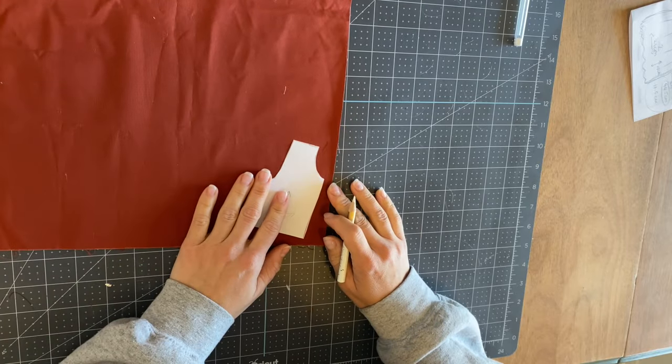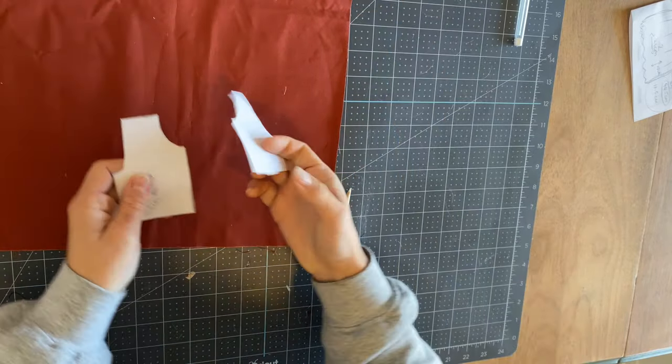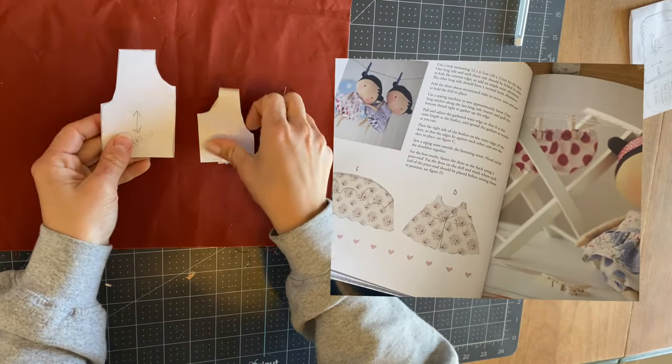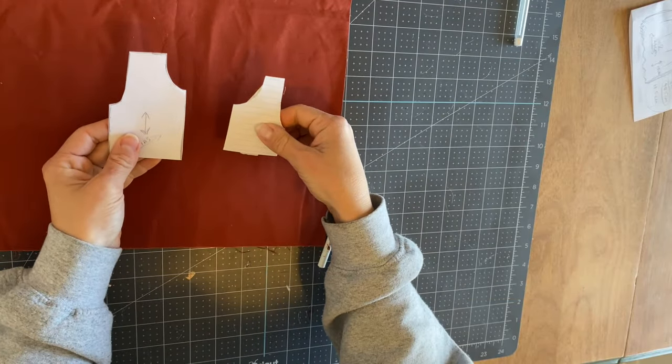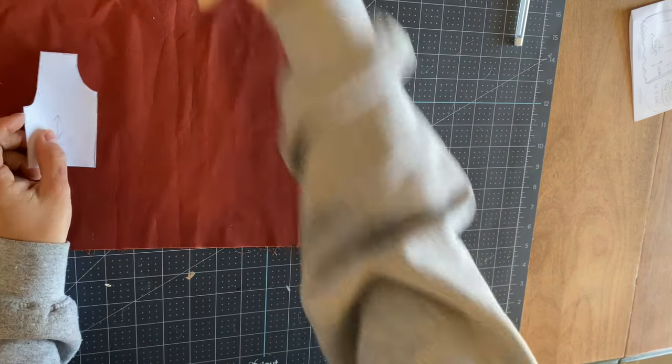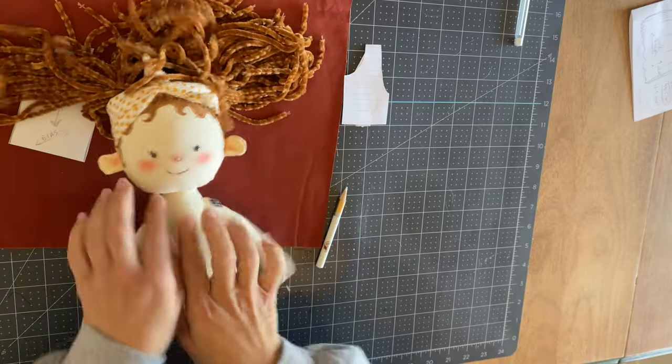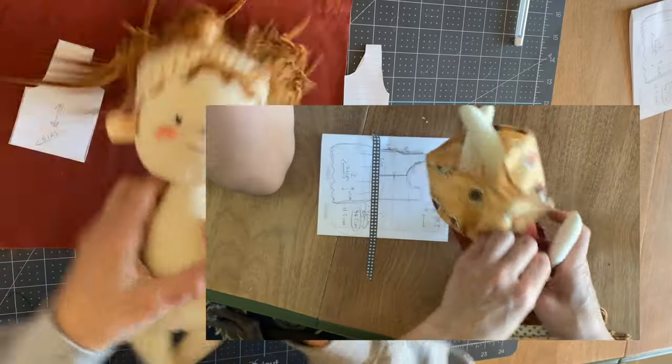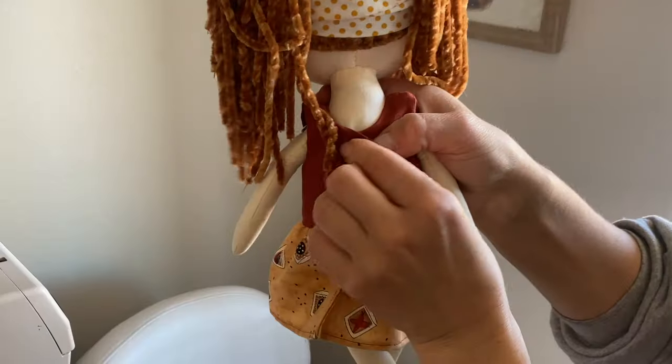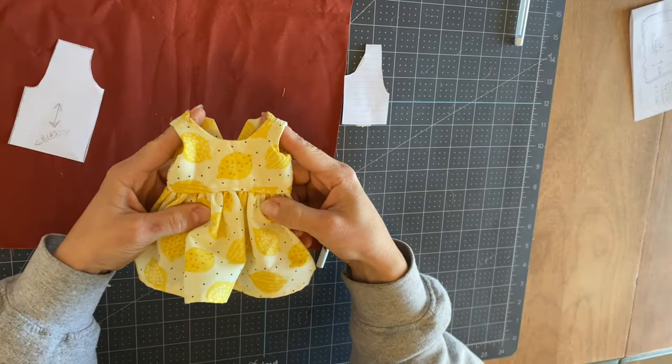Alright, so what we'll need, if you could imagine this, is that we're going to have two half pieces and one full piece like this. The full piece is going to be on the front and the two half pieces will wrap around the body. That's how the dress will close. So two half pieces in the back and then the one full piece in the front.